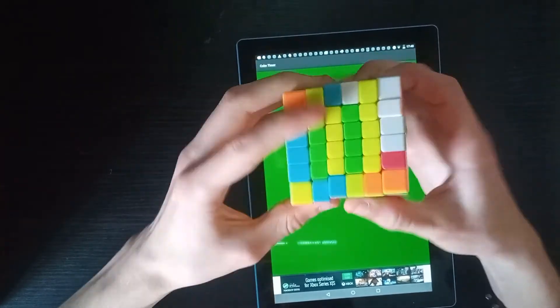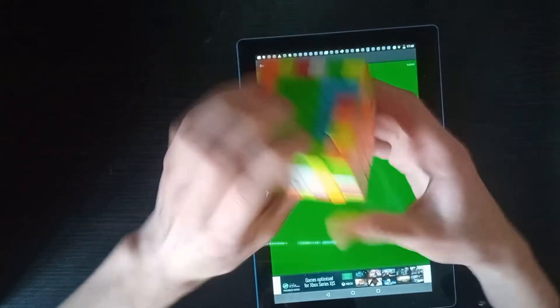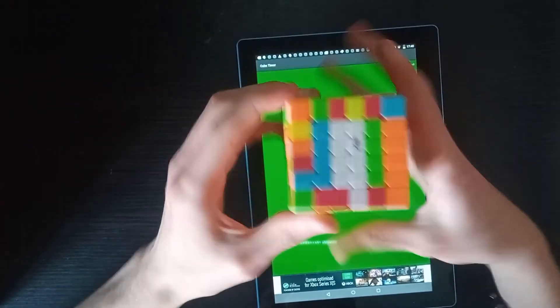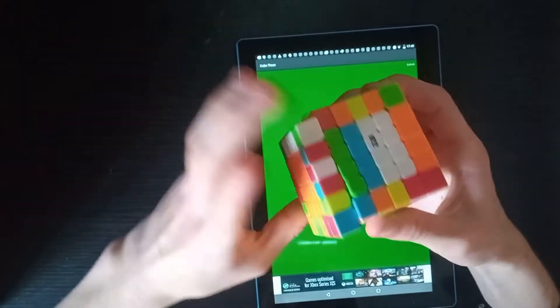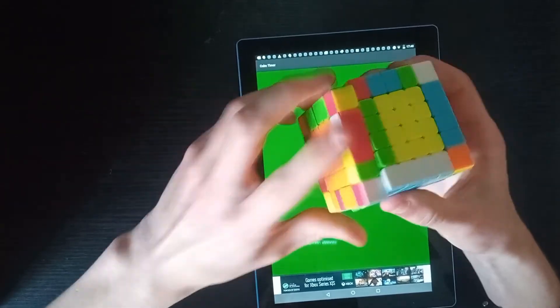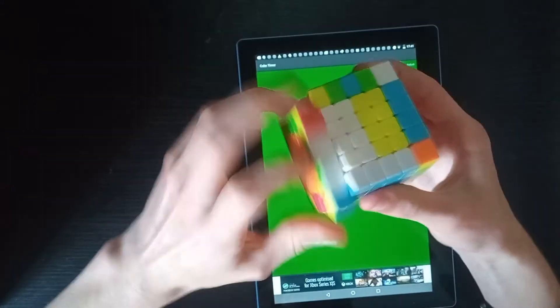As for the QiYi budget line, so they recently released a QiYi Qizheng W. I'm hoping they'll release, like, a QiYi Qizheng S2 7x7, or something like that, that's stickerless and performs well. I mean, it'll probably just be a copy of the Spark, but hopefully it'll still perform really good.